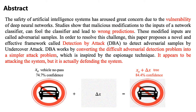Abstract. The safety of artificial intelligence systems has aroused great concern due to the vulnerability of deep neural networks. Studies show that malicious modifications to the inputs of a network classifier can fool the classifier and lead to wrong predictions. These modified inputs are called adversarial samples. This paper proposes a novel and effective framework called Detection by Attack (DBA) to detect adversarial samples by undercover attack. DBA works by converting the difficult adversarial detection problem into a simpler attack problem, inspired by the espionage technique — it appears to be attacking the system, but it is actually defending the system.